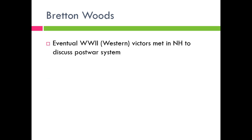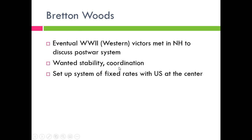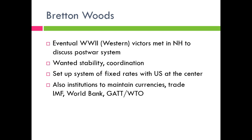At the end of World War II, knowing what had happened after World War I, major leaders met a year before the war ended in New Hampshire at the Bretton Woods Resort to discuss the post-war international system, hoping to establish stability, coordination, and as a result, prevent World War III. They set up a system of fixed exchange rates with the U.S. at the center. The IMF — the International Monetary Fund — was designed to lend countries money to maintain fixed rates. The World Bank addressed reconstruction, and GATT (the General Agreement on Tariffs and Trade) handled trade, eventually leading to the World Trade Organization in 1995. The goal was coordination to stop the chaos that followed World War I.